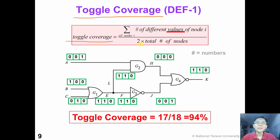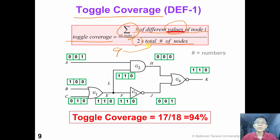The definition of toggle coverage is as follows. In the denominator, we have 2 times the total number of nodes. In the numerator, we sum up all the different number of values for each node. For example, in this simple circuit we have totally 9 different nodes, so in the denominator we have 18.